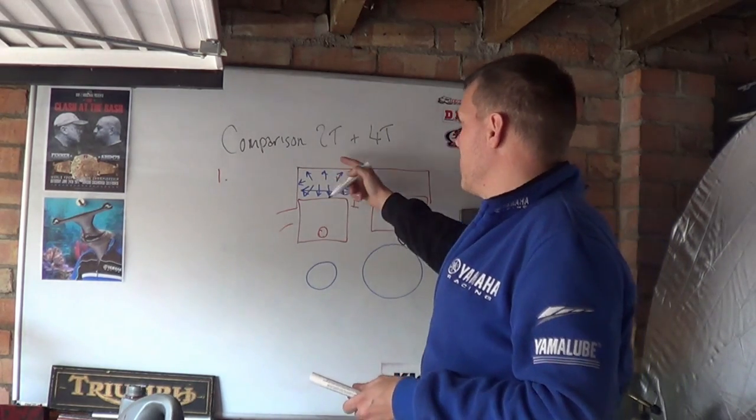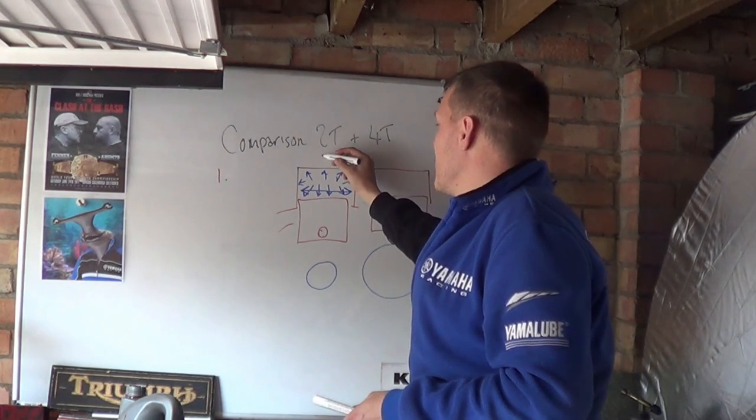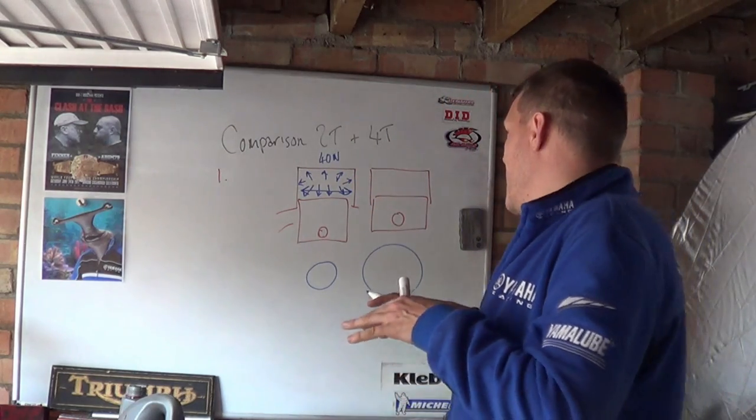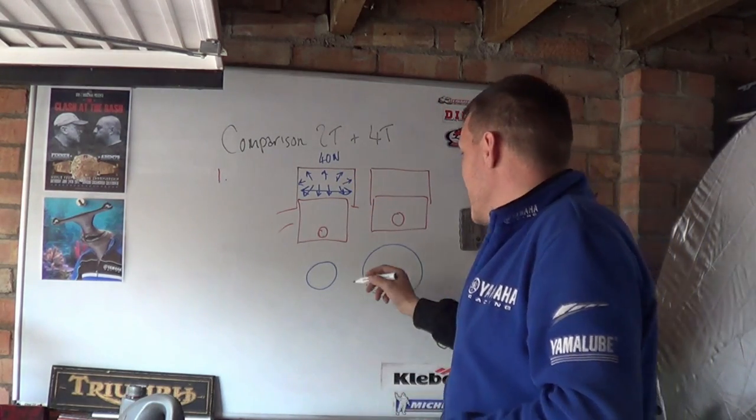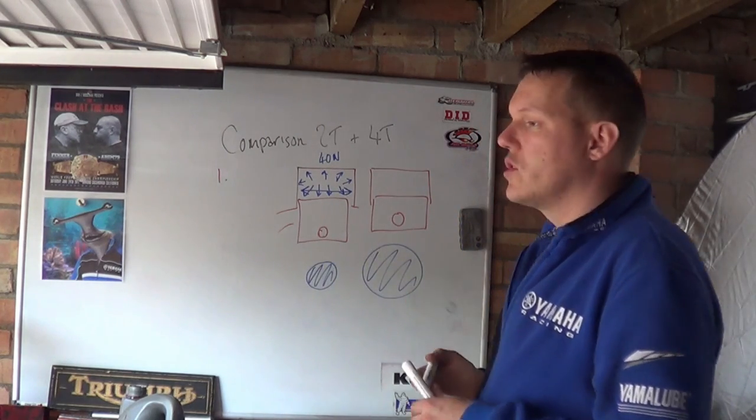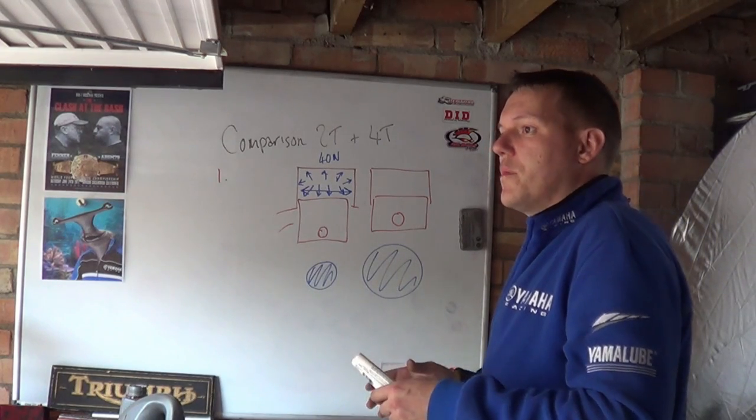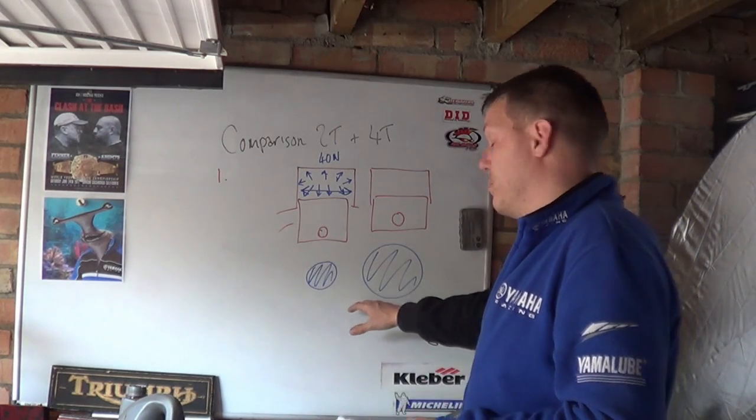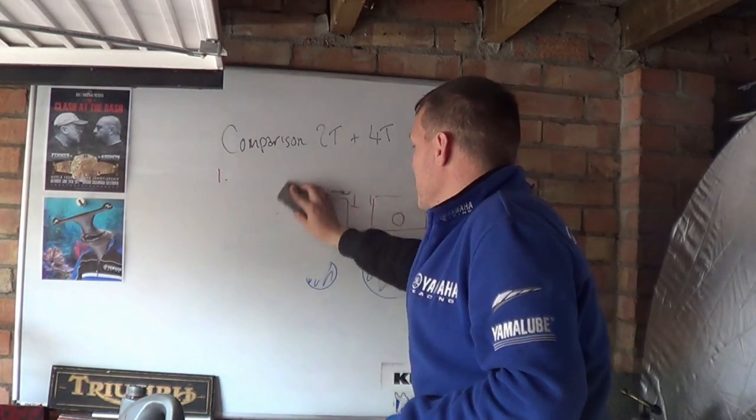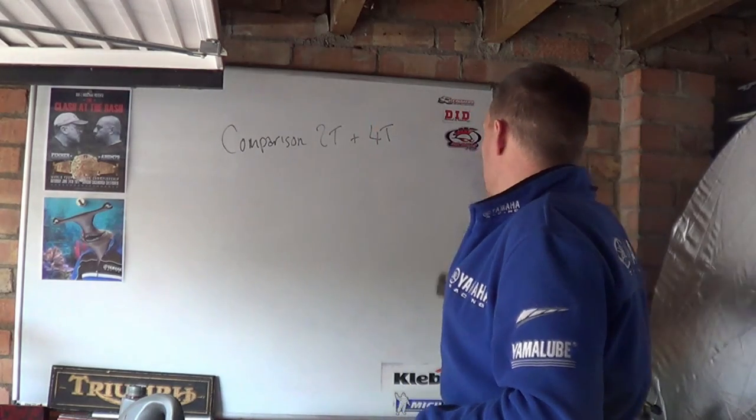Every square centimeter, every square inch has, say, 40 newtons of force applied to it in the form of pressure. Obviously this is a smaller surface area than this is. So generally a four-stroke can extract more torque through the piston just on that surface area alone. That's reason number one: piston surface area compared to the stroke.